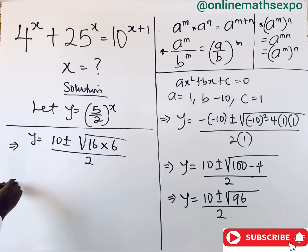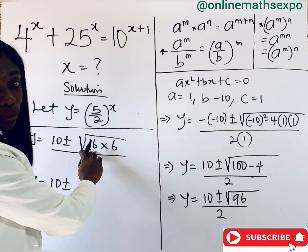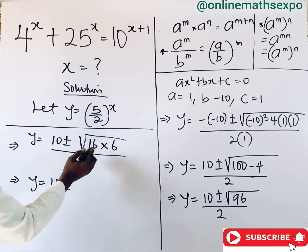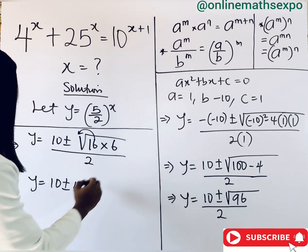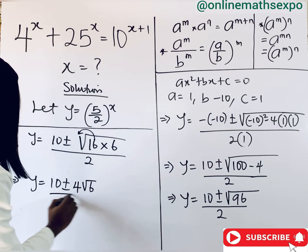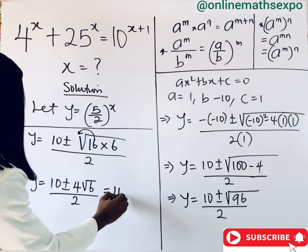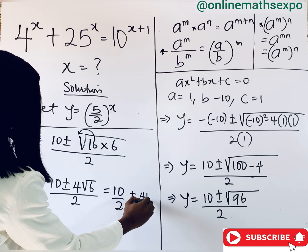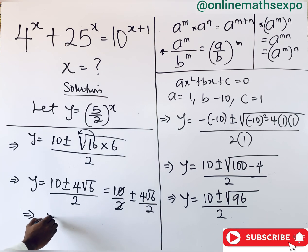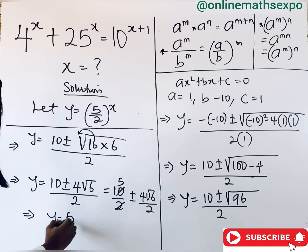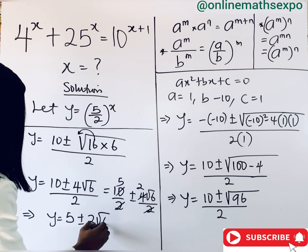So we are going to have y equals 10 plus or minus — we get the square root of 16, which gives us 4, so we remove it from the root sign, and we have 4 root 6 — all over 2. This is the same as 10 over 2, plus or minus 4 root 6 over 2, and this simplifies to y equals 5 plus or minus 2 root 6.